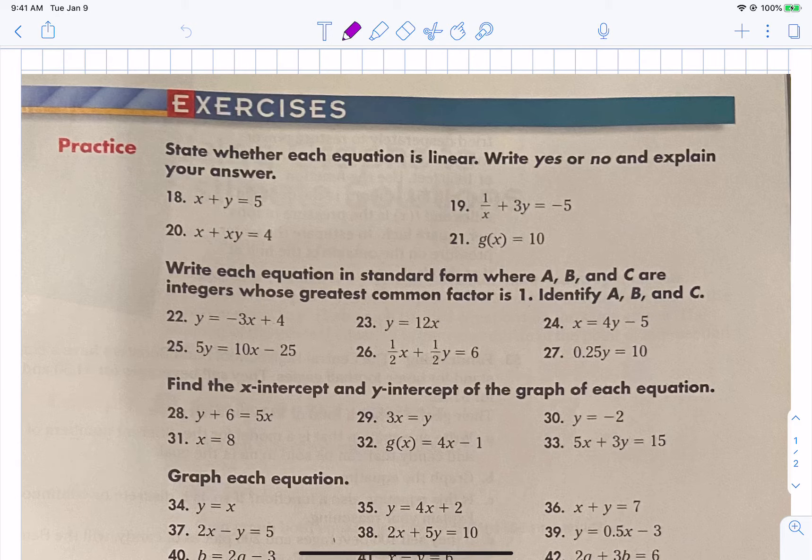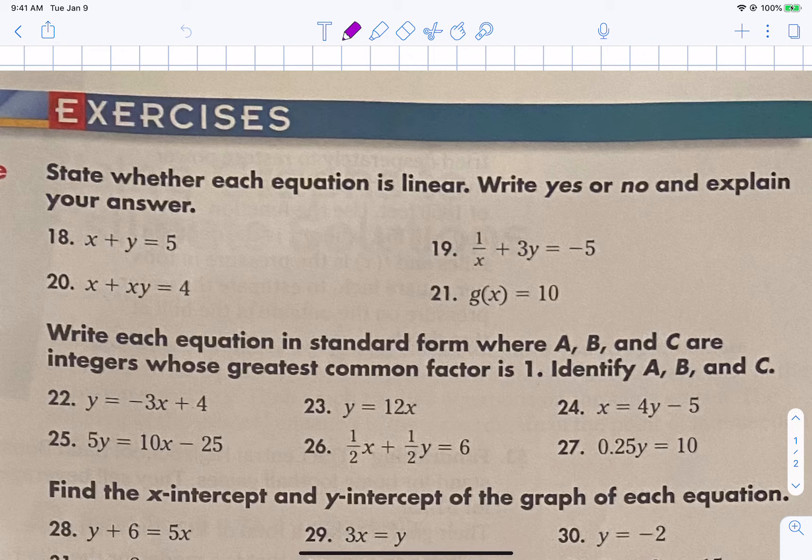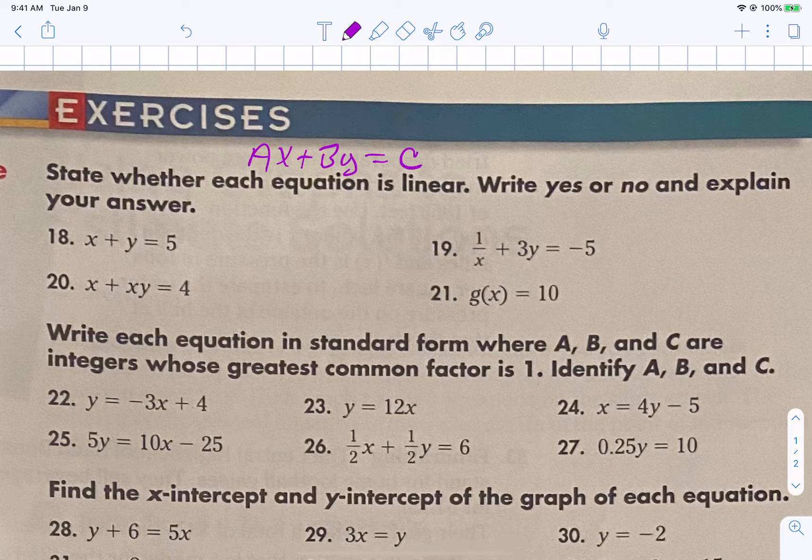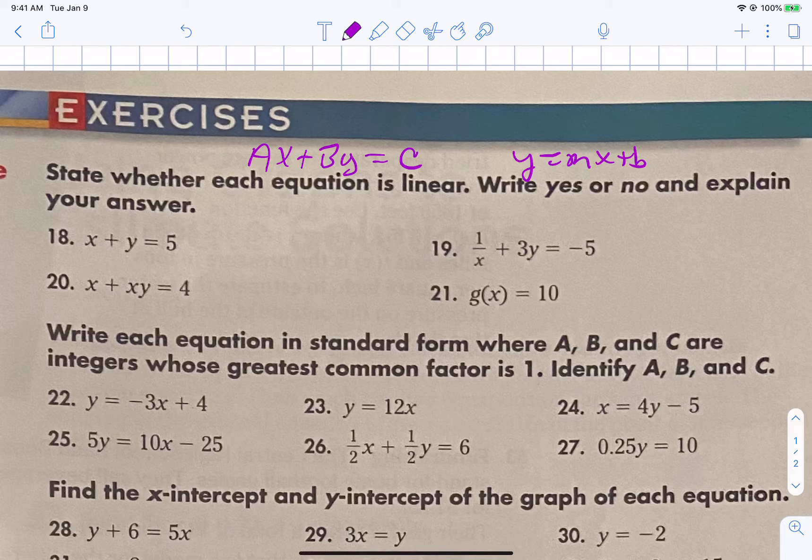Questions 18 through 21 are asking state whether the equation is linear, yes or no. Remember, we have two forms of linear equations: Ax plus By equals C, which is standard form, or y equals mx plus b. You'll notice that the x and y are separated and don't have any powers on them. They're just basically standard x's and y's.